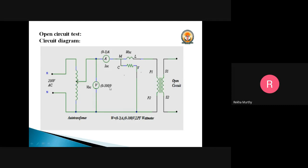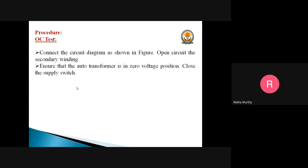The procedure for the OC test: ensure the secondary winding is open-circuited and the autotransformer is at zero voltage position. Close the supply switch and vary the autotransformer until the rated voltage is applied to the primary winding. When conducting this test on the bench, we will not be provided with 230V; instead, we use 50% tapping which leads to 115V. So we have to prefer 115V at the primary side.